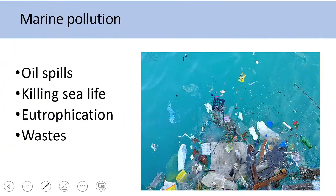Marine pollution. Oil spills from petroleum tankers kill sea life. Fertilizers that leak from agriculture cause eutrophication — when these fertilizers reach the water, they allow algae to grow on the surface, preventing sunlight from reaching plants on the seafloor. This means less oxygen in the water and marine animals will die. Also, throwing waste and garbage in the water destroys marine habitats.